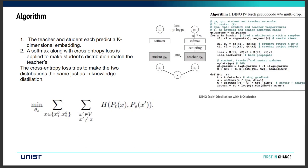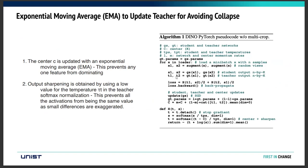Regarding why centering is used: they state that two main types of collapse can happen. The first is that only one feature dominates in the model; the second is that no matter what the input is, the output is the same. To avoid these collapses, they apply centering. It is updated with exponential moving average and is subtracted from the teacher model output to prevent one feature from dominating.